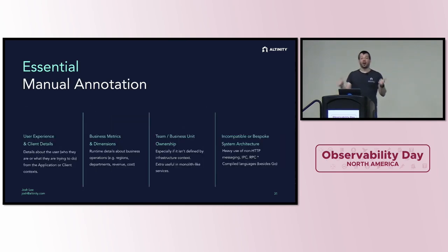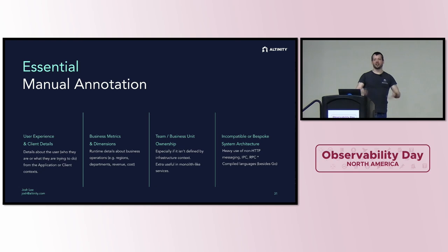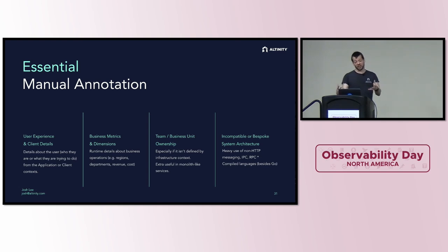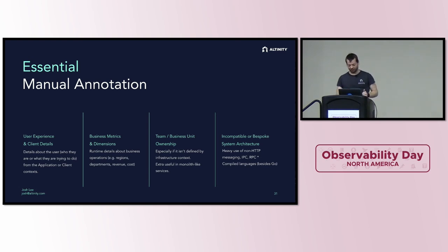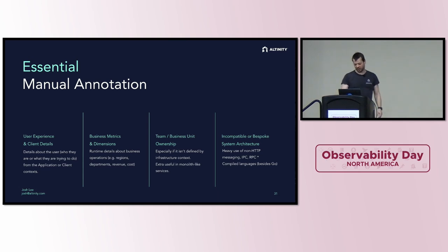We also need to add additional details even when using auto-instrumentation. Auto-instrumentation injects the SDK into our programs, which means the OpenTelemetry API is available in our code. So even though we started using it to avoid modifying code, we can now put OpenTelemetry API calls in to add extra data. That's where we layer in user experience details, client details, lines of business, cost centers, revenue departments — all that metadata. And if you're using custom architecture or non-HTTP remote procedure calls, your auto-instrumentation traces may be incomplete.